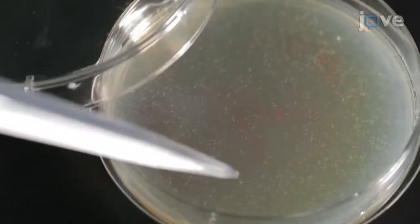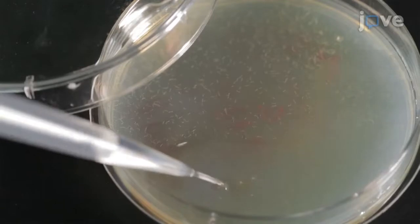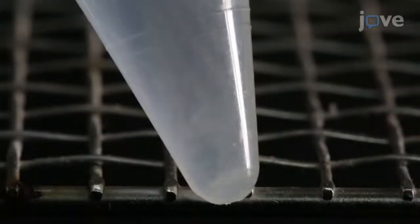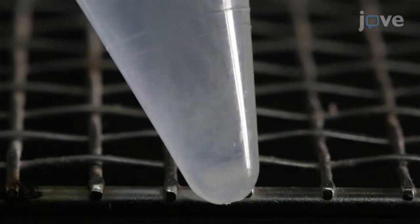To begin, wash approximately 2,000 gravid adult worms with sterile deionized water. Repeat the wash three times, keeping the worms at the bottom of the tube.